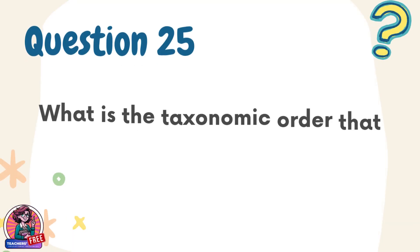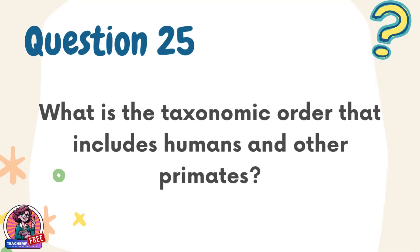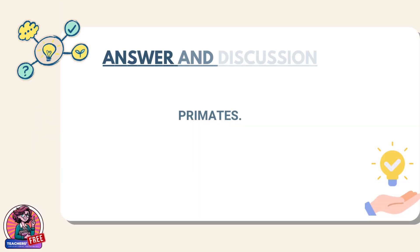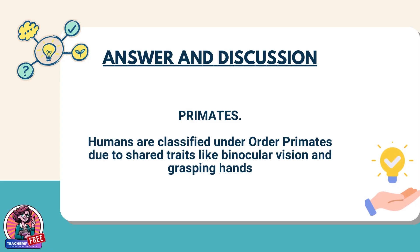Question 25. What is the taxonomic order that includes humans and other primates? Answer: Primates. Humans are classified under order Primates due to shared traits like binocular vision and grasping hands.